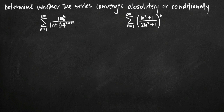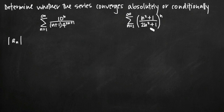It's important to remember that a series is conditionally convergent if it converges but is not absolutely convergent. The series is absolutely convergent if the absolute value of the series is convergent. So basically, if the absolute value of the series a sub n is convergent, then we know that the series is absolutely convergent.